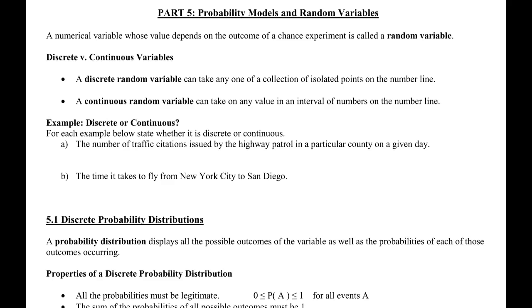So as a reminder, a discrete variable can take any one of a collection of isolated points on a number line. So if you were thinking about what this looks like visually, you have your number line and there are just certain numbers that are possible. Can't have any of the values between. So a lot of times we're talking about number of people in a family, or if we're talking about the number of kittens selected when we're choosing them with or without replacement out of a bag.